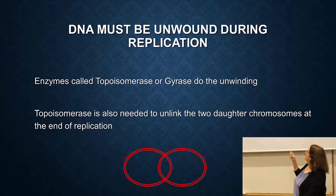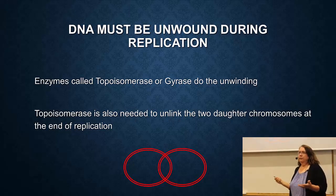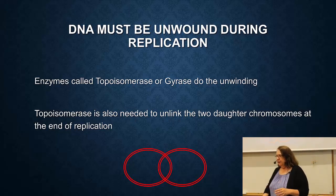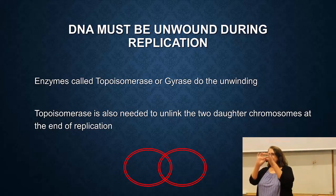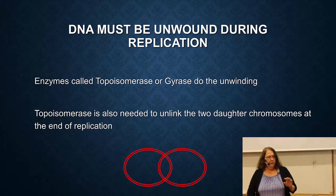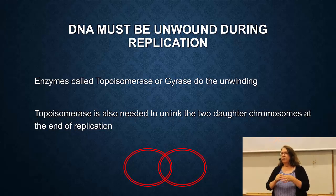Those enzymes are called topoisomerases. Topoisomerases are needed to unwind the DNA during DNA replication or to wind it back up. In bacteria, there's another enzyme called gyrase, which works essentially the same as topoisomerase — it's a type of topoisomerase. In addition, when you copy a whole circular piece of DNA, at the end of the replication process you end up with the two strands linked together, so they can't come apart and go into two cells. You need topoisomerase to unlink those two strands. It's an extremely important enzyme — if you don't have it, the cell cannot divide.